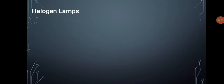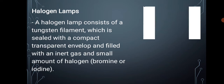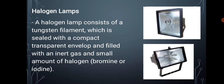Number three is halogen lamps. A halogen lamp consists of a tungsten filament, which is sealed with a compact transparent envelope and filled with an inert gas and a small amount of halogen, which is bromine or iodine. These lamps are smaller than conventional lamps. Halogen increases the lifetime and brightness of the lamps. The luminous efficiency of a halogen lamp is about 25 lumens per watt.